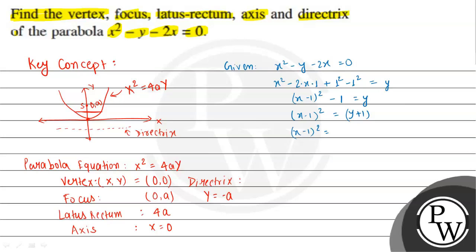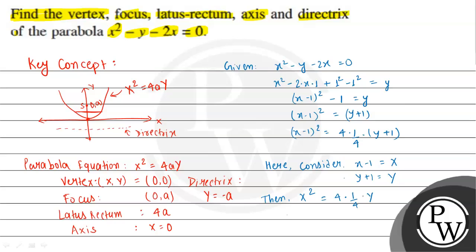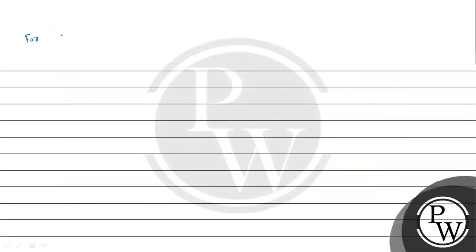Now, if we consider X equal to x minus 1 and Y equal to y plus 1, then the equation becomes X squared equal to 4 times 1/4 times Y. So the value of a is 1/4.